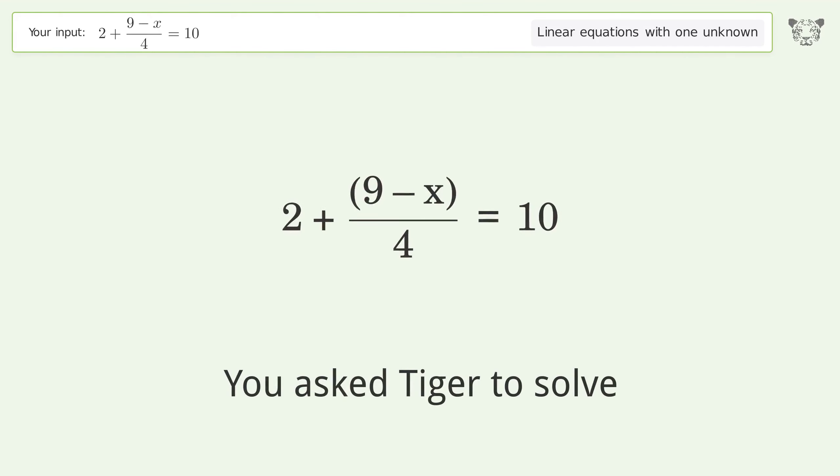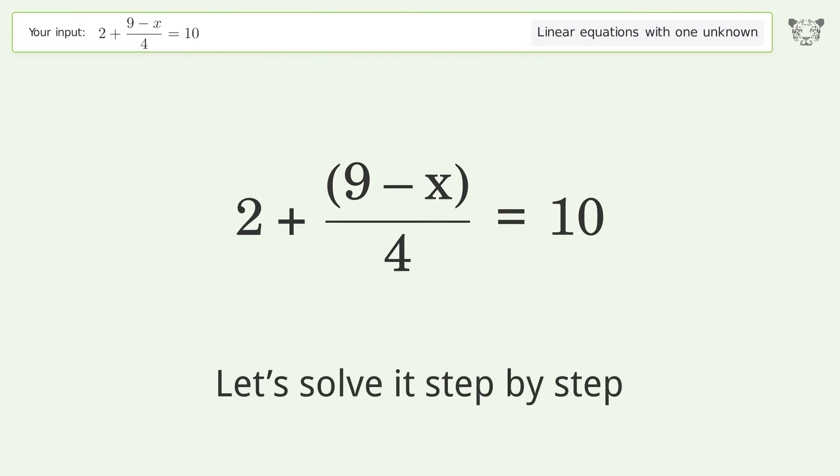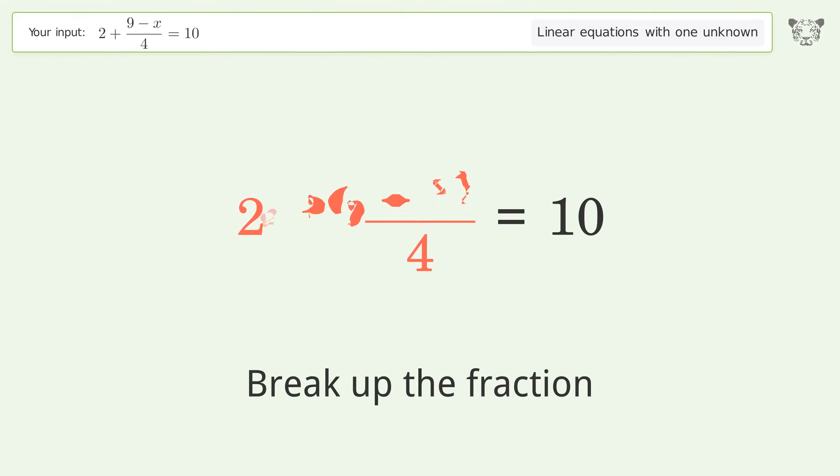You ask Tiger to solve this. This deals with linear equations with one unknown. The final result is x equals negative 23. Let's solve it step by step. Simplify the expression, break up the fraction, and group like terms.